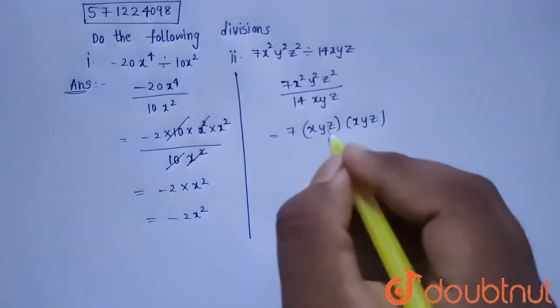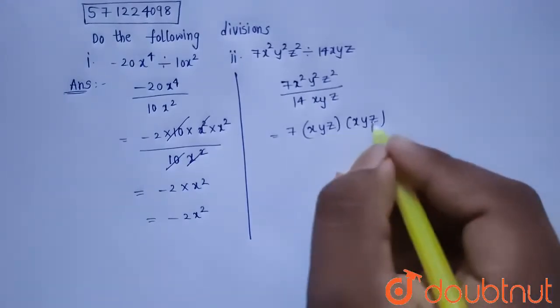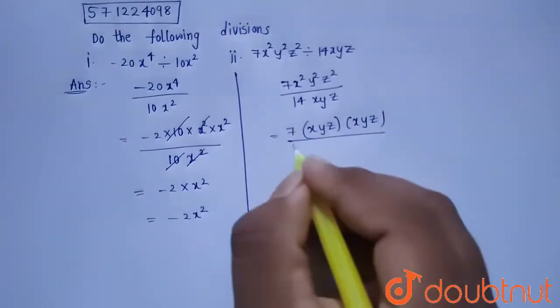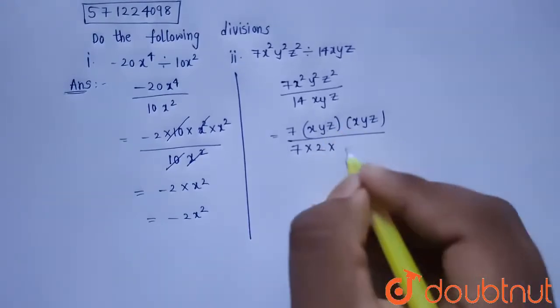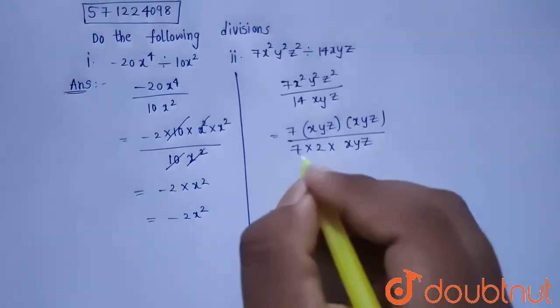Because x into x is x square and y into y is y square and z into z is z square. And this 14 can be written as 7 into 2 into x y z.